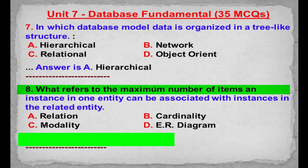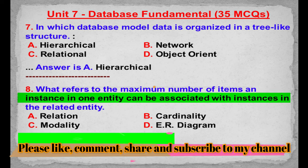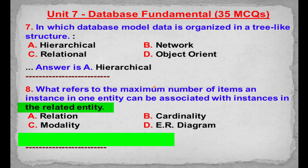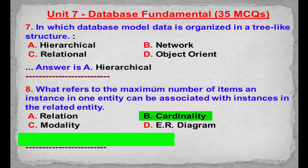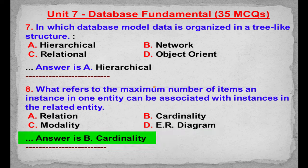MCQ number 8: What refers to the maximum number of instances in one entity that can be associated with instances in the related entity? Option A: Relation. Option B: Cardinality. Option C: Modality. Option D: ER Diagram. Correct answer is Option B: Cardinality.